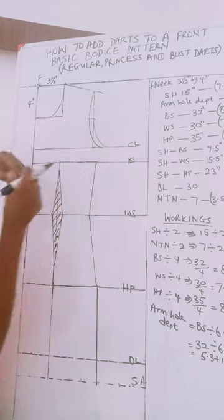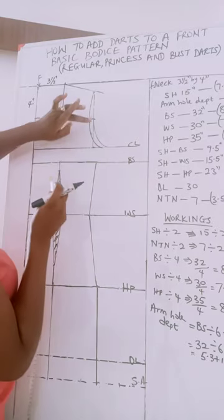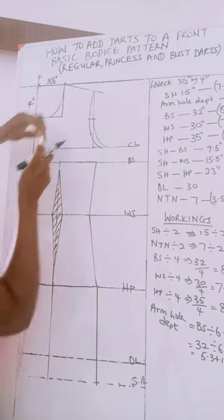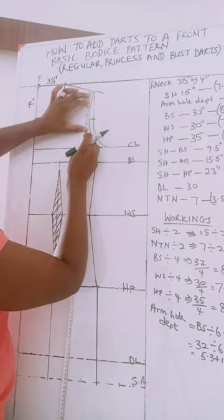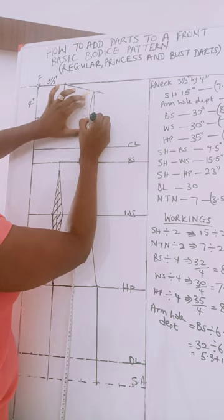For some cases when you want to make the curve of the princess dart from the shoulder line, you come down by four inches. By four inches you mark four inches.